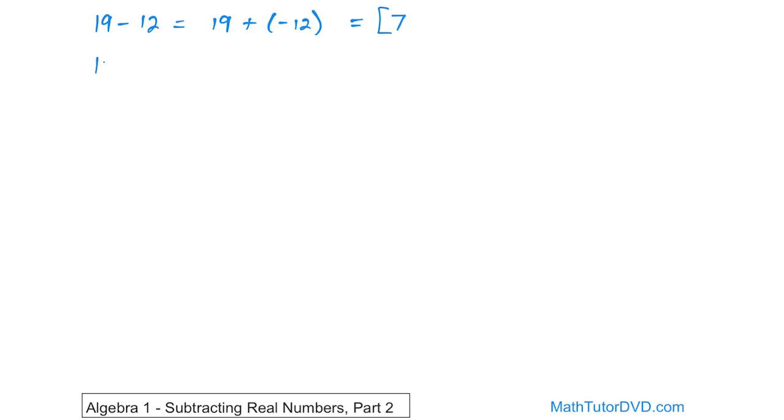Now, what if we have 12 minus 19? How do we handle that? 12 minus 19, same thing. So we'll have the 12 minus, I'm sorry, make it plus negative 19, because subtraction becomes adding a negative number.